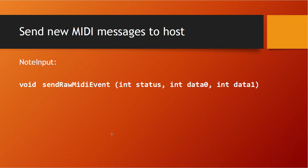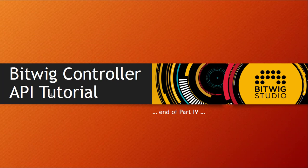One last thing: sometimes it makes sense to create your own MIDI messages — for example, to handle pitch bend data differently or to transform notes. There is a function on the note input called sendRawMidiEvent() where you can create and send your own MIDI event to Bitwig. But always be aware the script is never real-time; Bitwig only calls it when it has time, so you cannot create a sequencer this way. It only works meaningfully for creating modulation effects or transforming data. That's the end of part four — see you in part five, and until then, write some funky code!